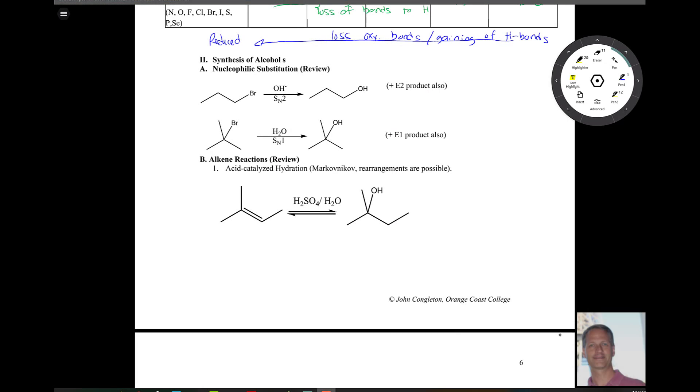Alright, so let's get into the reactions of alcohols here. We're going to learn how to make them. Just reviewing very quickly, we've seen SN2 reactions and SN1 reactions from chapter 6. We've seen hydration, that's a chapter 7 reaction.